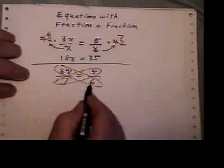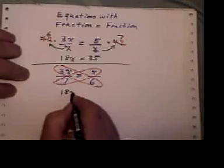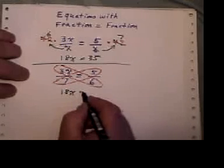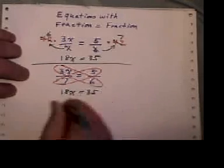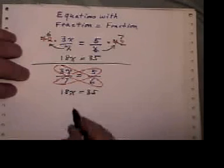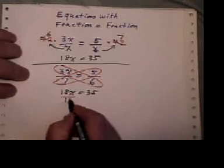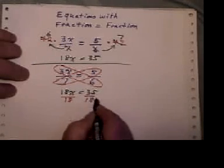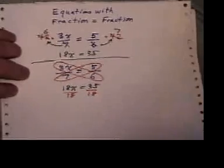So 3x times 6 is 18x. 7 times 5 is 35. Now the opposite of multiplying by 18 is dividing by 18. So automatically out pops my answer.